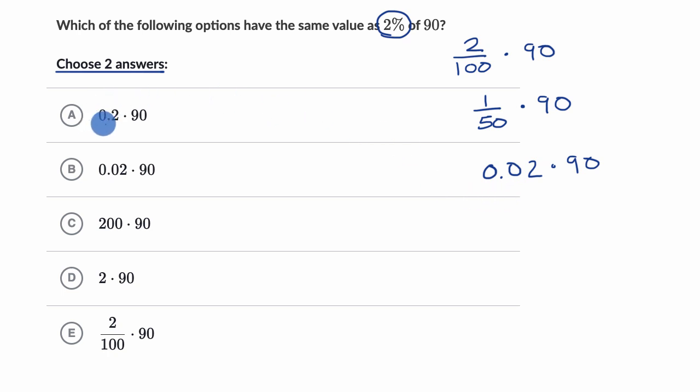All right, now let's look at the choices. This is 0.2 times 90. This is not 2%. This actually would be two-tenths or 20%, so let me rule that one out. This one right over here, this is two hundredths times 90. We already wrote that down. I like this choice.